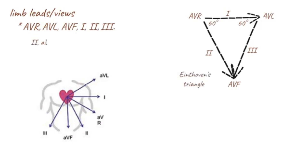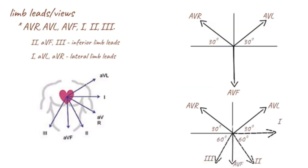Leads 2, AVF, and 3 are called inferior limb leads because they primarily observe the inferior wall of the left ventricle. By combining the limb vectors, we can create the hexaxial system, which gives a perspective of the view of all six limb leads.